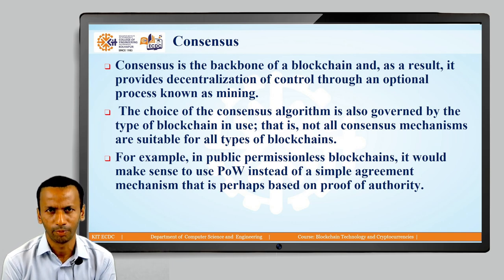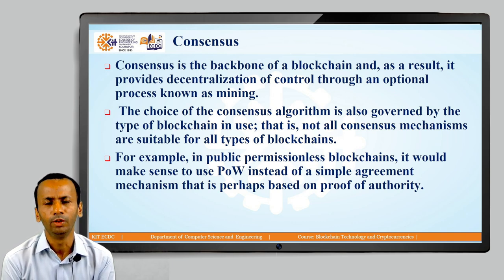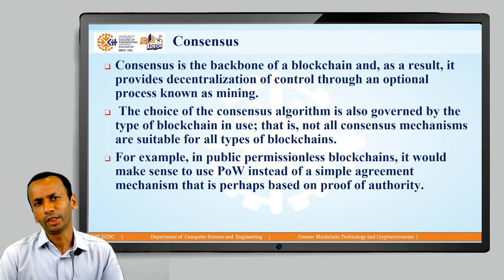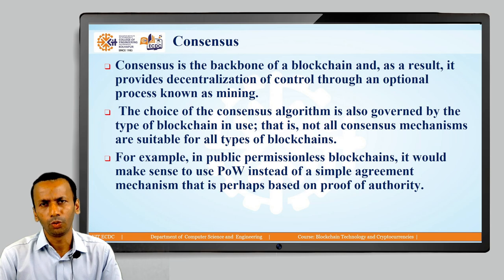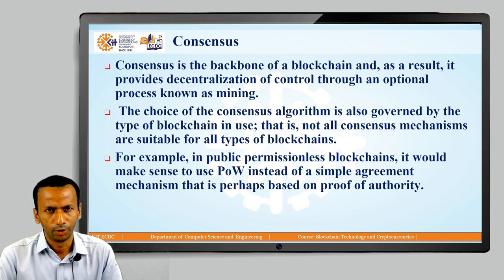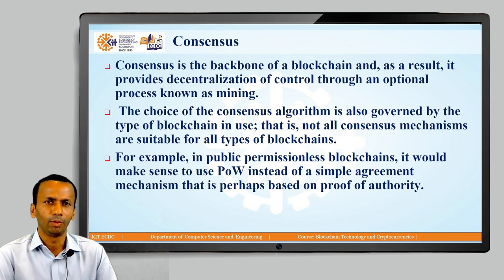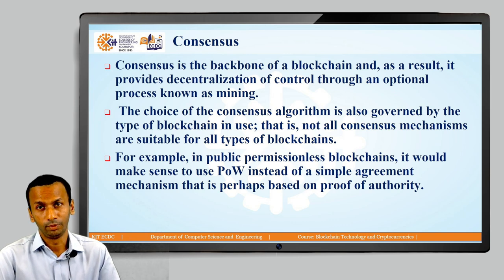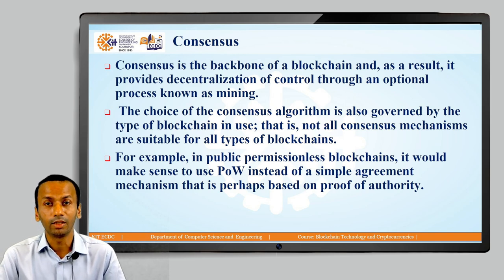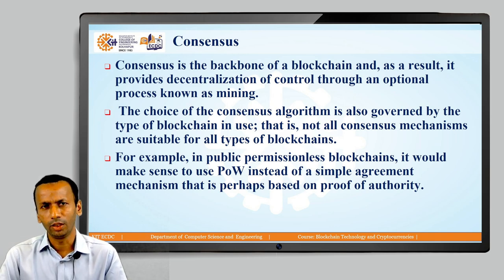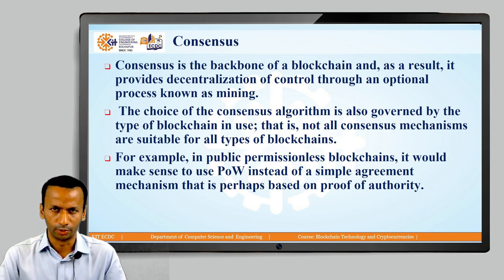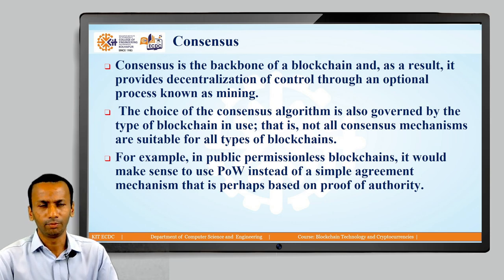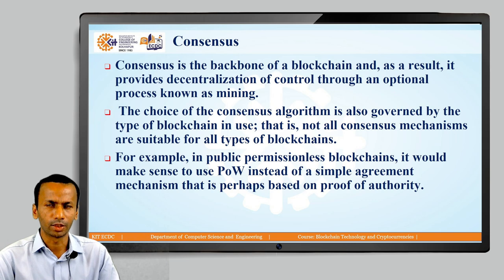Proof of work is preferred over a simple agreement mechanism based on proof of authority. Most of the time when dealing with private blockchains, we use simple agreement protocols rather than complex consensus algorithms. But for public permissionless blockchains, we always prefer Proof of Work (PoW). It depends on the type and requirement of the blockchain.